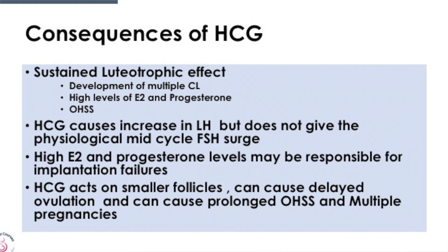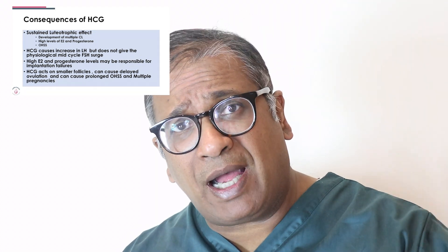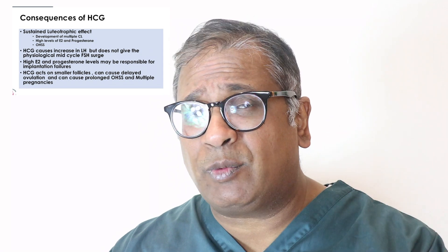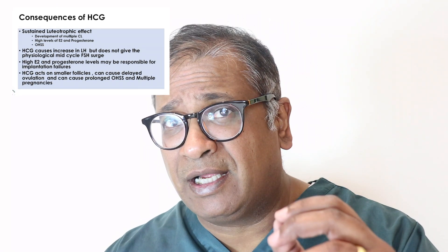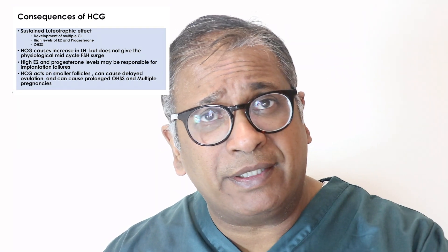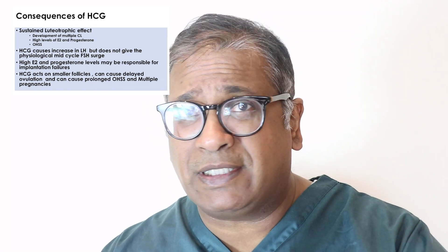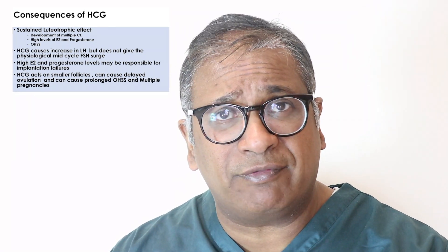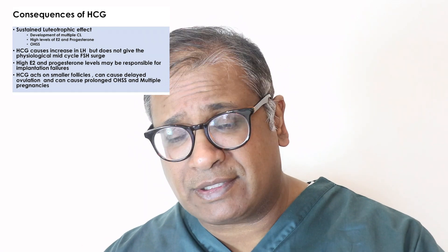We come to the consequences of HCG. HCG has a sustained luteotrophic effect, which gives you multiple corpus luteum, in turn giving rise to high E2 and high progesterone levels — another factor responsible for ovarian hyperstimulation. As a trigger, LH increases both FSH and LH, both required for final maturation. HCG only does one thing — it does not increase FSH. High E2 and progesterone levels may be responsible for implantation failure. Also, HCG acts on smaller follicles, causing delayed ovulation, thus prolonging ovarian hyperstimulation and potentially causing multiple pregnancies.